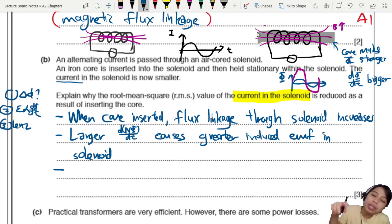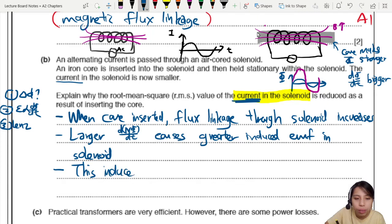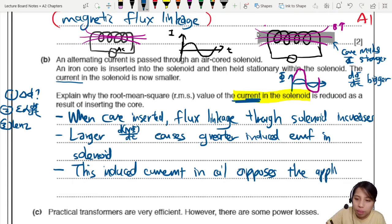So induced EMF is now greater in the coil, opposing the AC supply. So this AC supply is pushing current. Now got induced EMF to kick back at the AC supply some more. So difficult. Why you make life so difficult? And last one. We're talking about Lenz's law. This current. This induced current in the coil opposes,